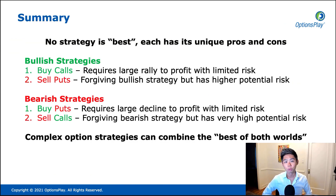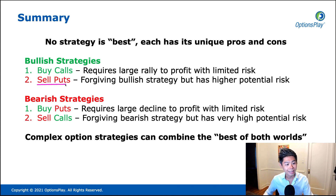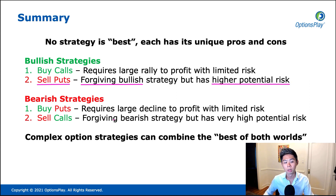So a quick review of what we discussed today. For bullish strategies, when you buy a call option, that requires the stock to make a big rally before you can profit, but in exchange you have limited risk. When you buy a put option, that also requires a large decline in order to profit, but it also provides limited risk. You can sell a put option — it is a very forgiving strategy that will profit in many different scenarios and has a very high probability of success, but in exchange you have much higher risk potential. The same applies to selling a call: it's a forgiving bearish strategy, but it has very high risk potential.